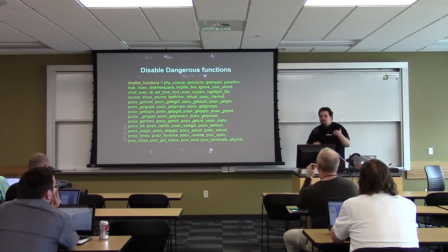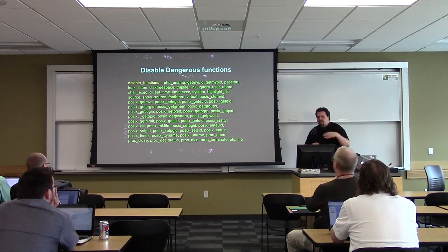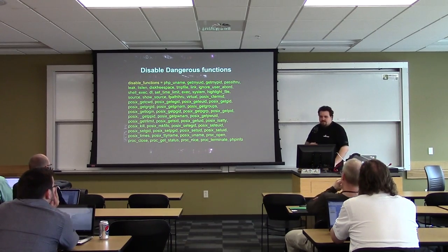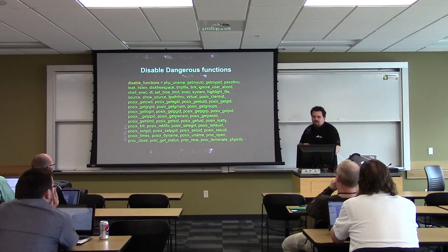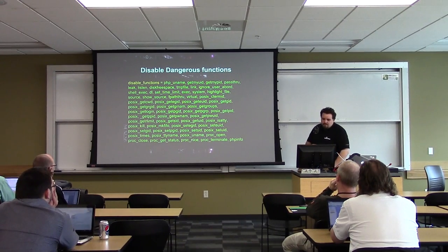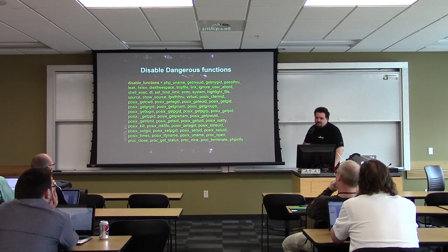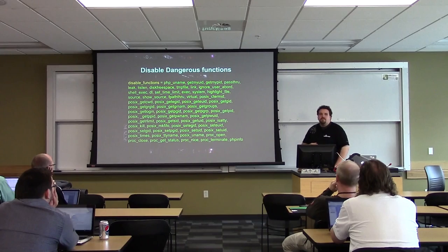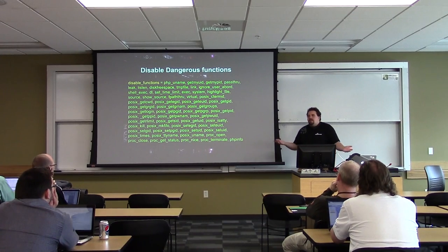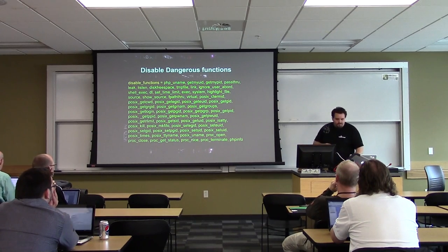These are the dangerous PHP functions to disable: exec and other functions that do operating system calls, and phpinfo. PHP info is a big information leakage — you look at it once when you need it, then turn it off. Why leave it on?